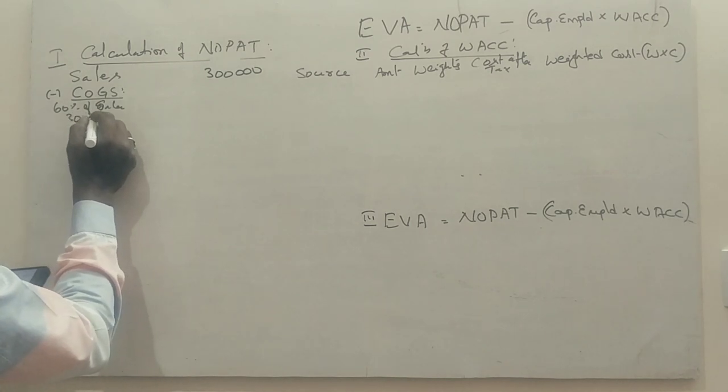First Sales 3 lakhs. Cost of goods sold 60% of sales, so 3 lakhs, 60% equals 1 lakh 80,000.